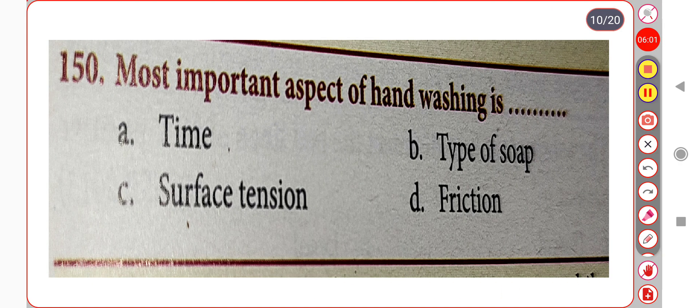Next question. The most important aspect of hand washing is: Option A. Time. Option B. Type of soap. Option C. Surface tension. Option D. Friction. Correct answer is Option D: Friction.